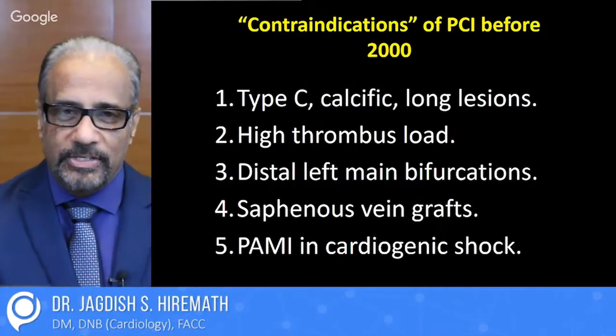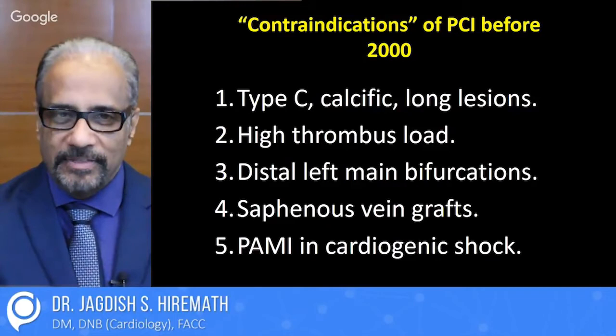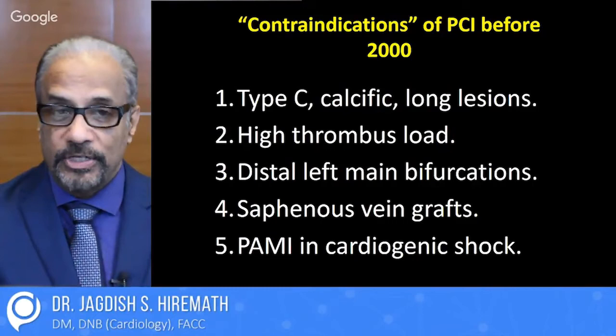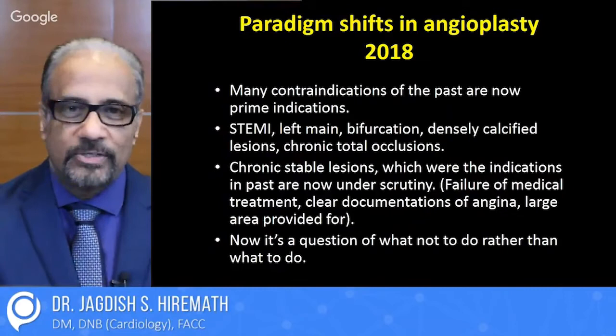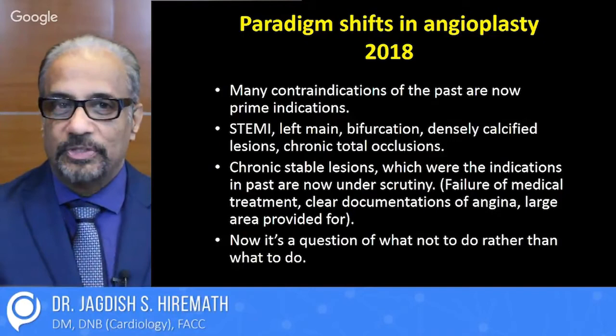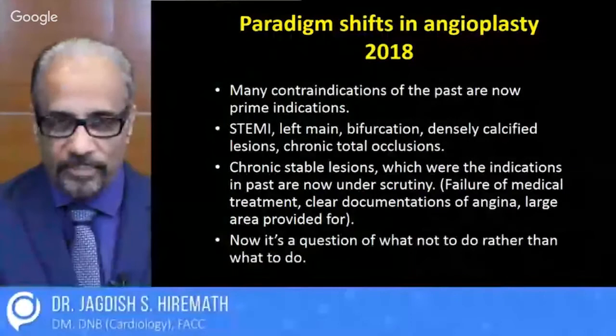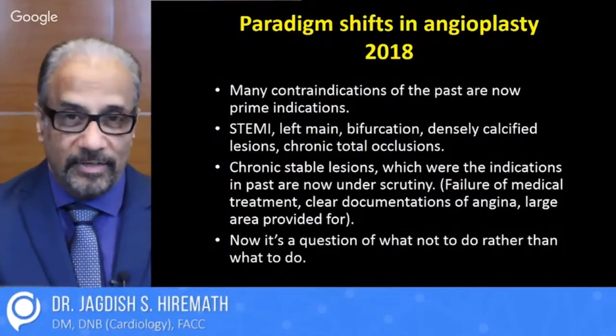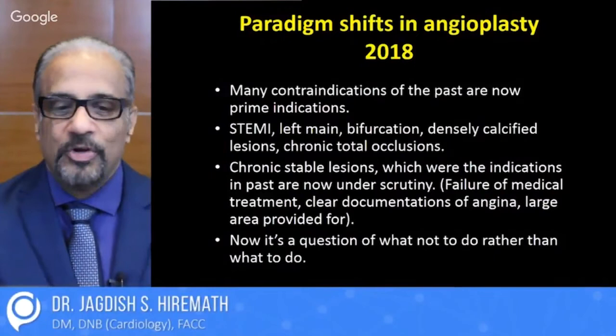Contraindications when angioplasty started in the initial years included: a bad calcific long lesion, high thrombus load inside the artery, distal left main bifurcation, saphenous vein grafts, and cardiogenic shock situation. But now there has been a paradigm shift in 2018. Many contraindications which existed in 2000 are now actually prime indications. ST-elevation MI, left main, bifurcation, saphenous vein, calcific lesions, and chronic total occlusions are all now treated right, left, and center by angioplasty. In fact, it's now a question of what not to do rather than what to do, because everything can be done.